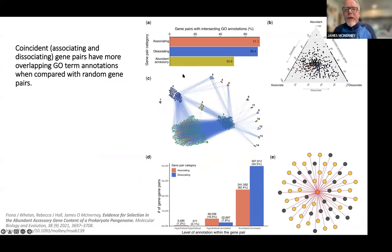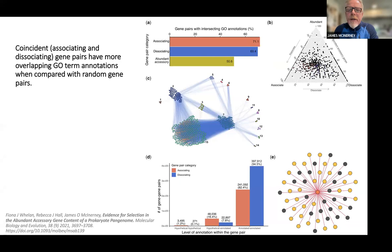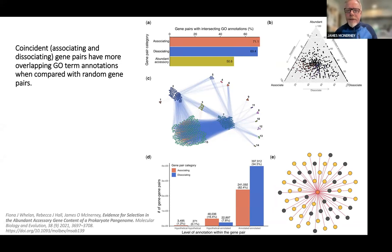If we picked at random two genes from our pangenome and asked about their GO annotation, about 50% of the time they would have the same or very similar GO annotation. But looking at the data that comes through from the Coin Finder pipeline, we see it's much higher — around 70% have the same GO annotation. We think this means that genes that are functionally doing the same kind of thing either strongly like one another or strongly don't like one another, and they're a little bit more agnostic about genes that don't have the same GO annotation as themselves.